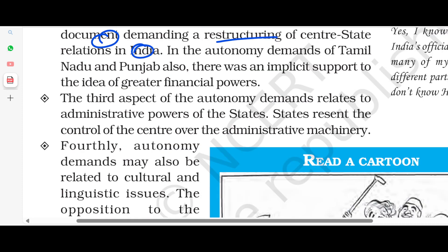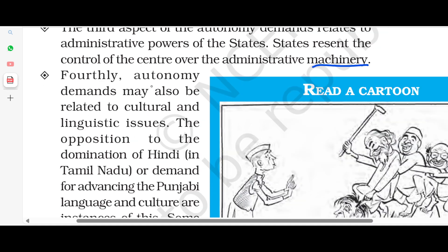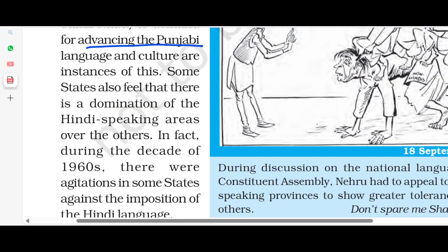The third aspect of autonomy demands relates to administrative power of the state. States resent the control of the center over the administrative machinery. The fourth aspect is that autonomy demands are also related to cultural and linguistic issues. Opposition to the domination of Hindi in Tamil Nadu, and the demand for advancing Punjabi language and culture, are instances of this. Some states feel that there is domination of Hindi-speaking areas over others. In the 1960s, there were agitations in some states against the imposition of the Hindi language.